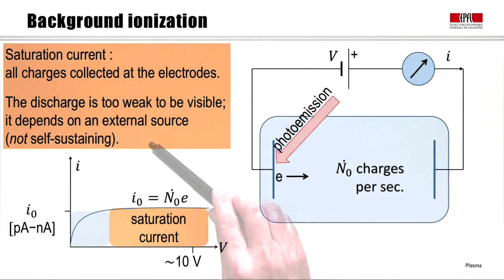Now, this discharge is too weak to be visible. It depends only on an external source. This is not a self-sustaining plasma.